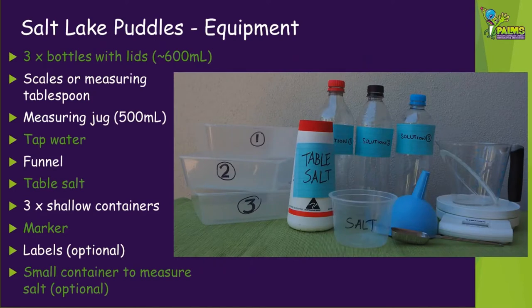To make some salt lake puddles you'll need the following equipment: three clean bottles with lids about 600 millilitres in size, labelled solution one, two, and three; some kitchen scales or a tablespoon measure if you don't have scales; a 500 ml measuring jug; some tap water; a funnel; about 20 grams of table salt in case any gets spilled; three shallow containers that hold 100 millilitres of liquid labelled one, two, and three; a marker to label things; and you may like to have some labels such as paper or stickers and a small container to scoop the salt from, but these are optional.